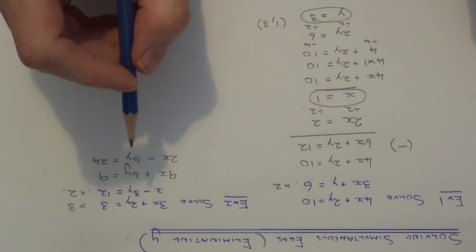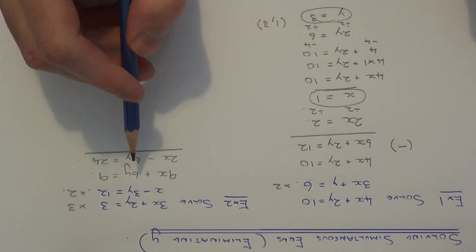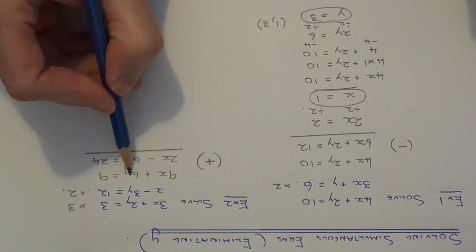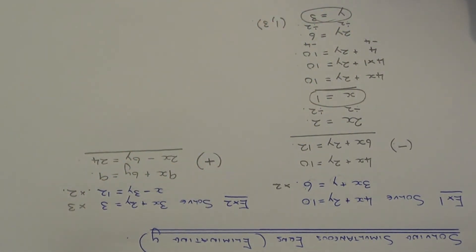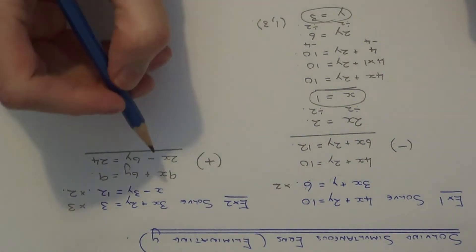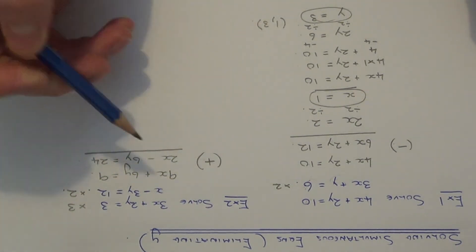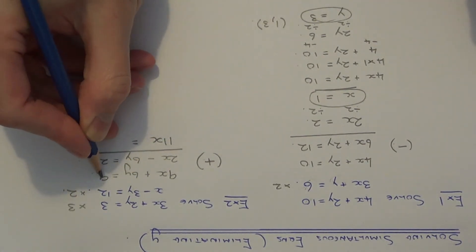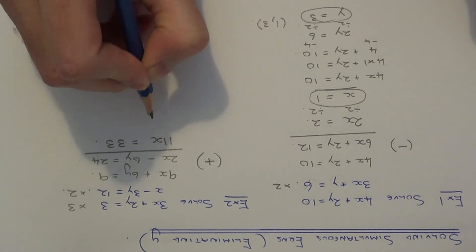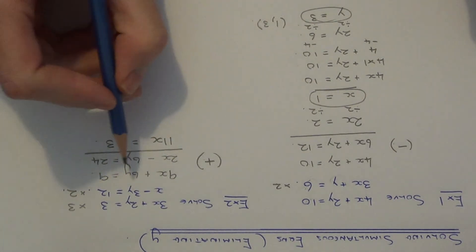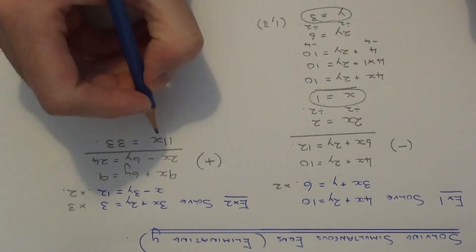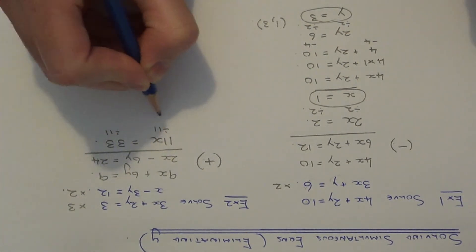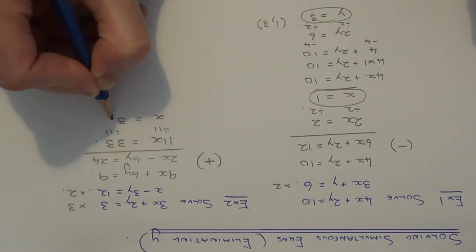This time, to eliminate the y's we'll need to add the two equations, because 6y minus 6y gives 0y. So 9x add 2x gives 11x, the y's eliminate, and 9 add 24 is 33. We've ended up with the simple equation 11x equals 33, which we just need to solve. Dividing both sides by 11 gives x equals 3.